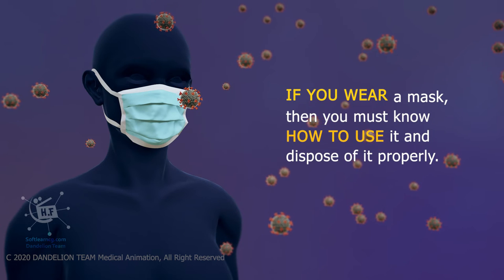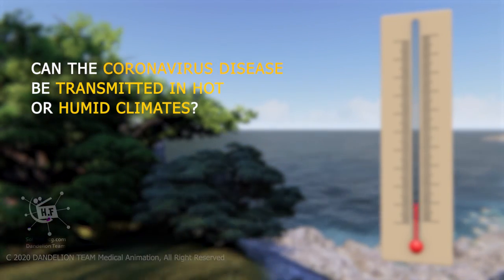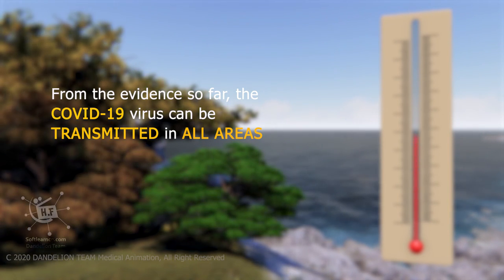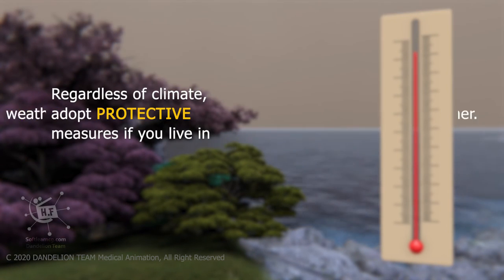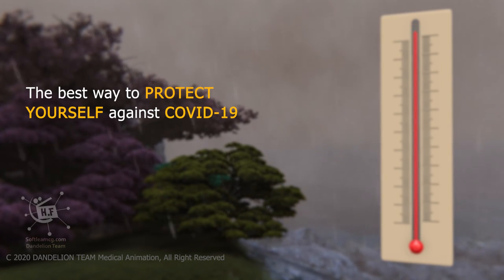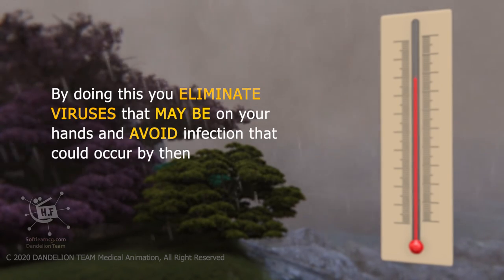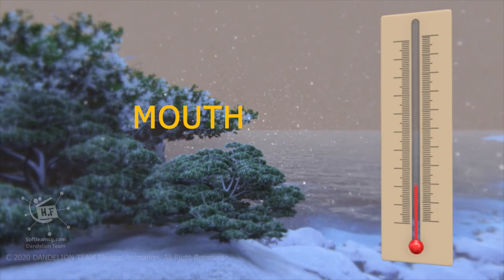Can the coronavirus disease be transmitted in hot or humid climates? From the evidence so far, the COVID-19 virus can be transmitted in all areas, including areas with hot and humid weather. Regardless of climate, adopt protective measures if you live in or travel to an area reporting COVID-19. The best way to protect yourself against COVID-19 is by frequently cleaning your hands. By doing this, you eliminate viruses that may be on your hands and avoid infection that could occur by then touching your eyes, mouth, and nose.